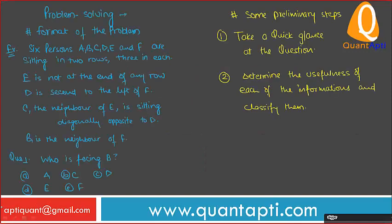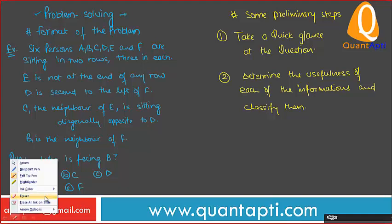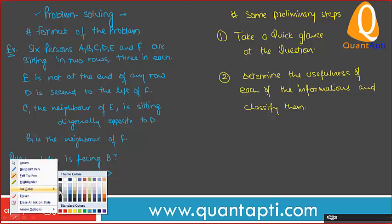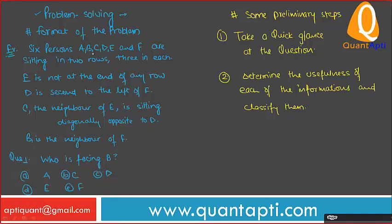Let's look at the format of the problem. The format is: 6 persons A, B, C, D, E and F are sitting in 2 rows, 3 in each. You don't know who is in the first row and who is in the second — any three of the six could be in each row.